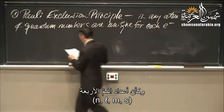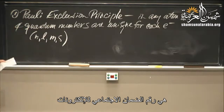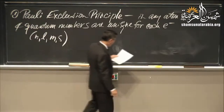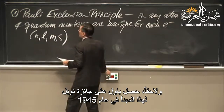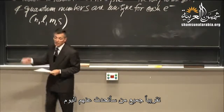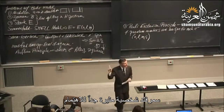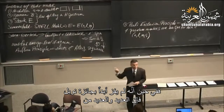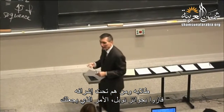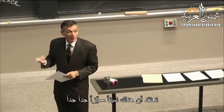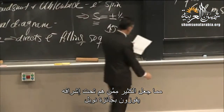You can think of the set of n, l, m, and s as a sort of social security number for each of the electrons. Pauli eventually received the Nobel Prize for this in 1945. Interestingly, while Sommerfeld himself never won the Nobel Prize, many of his students and protégés won Nobel Prizes — a testament to the quality of his mentoring.